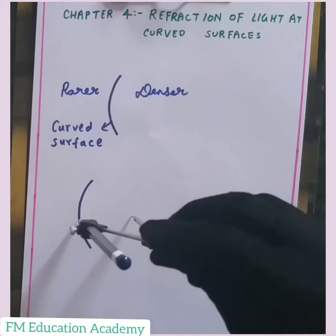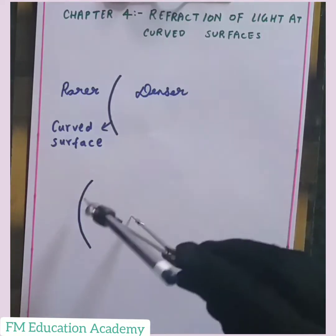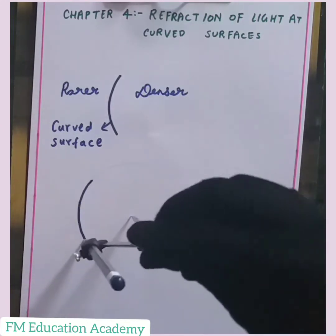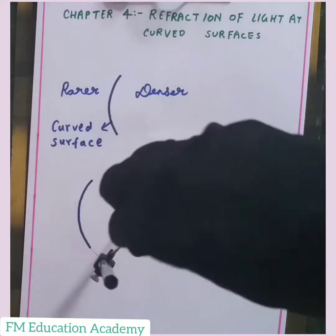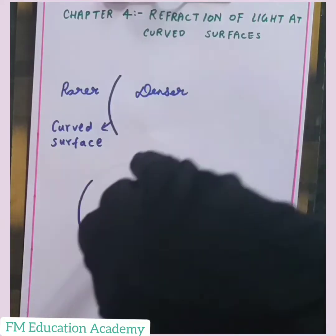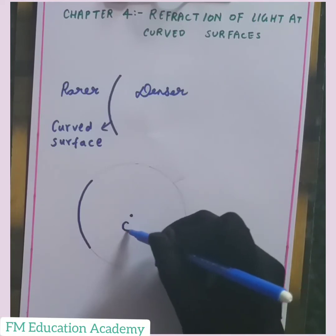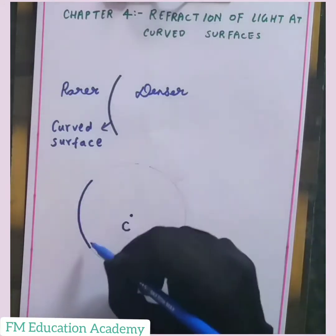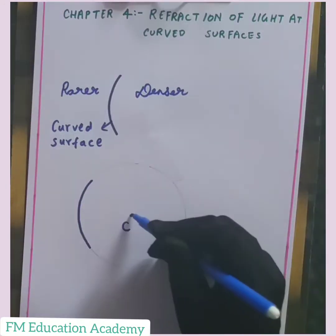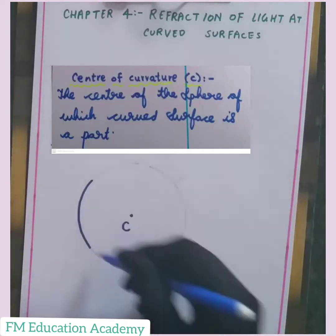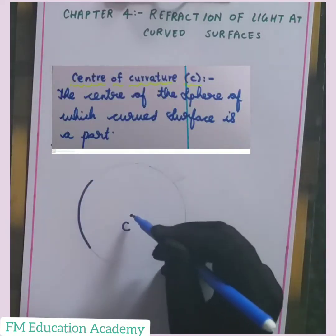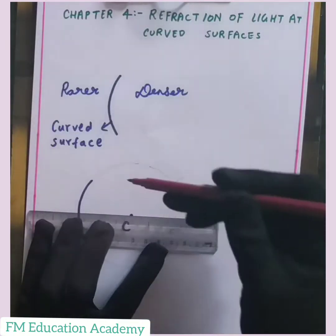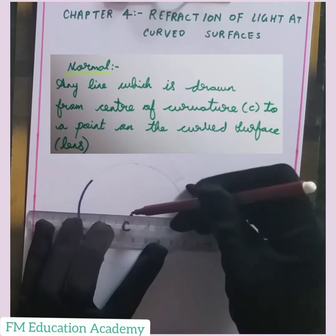Now let us see the terms related to these curved surfaces. We know that this curved surface has a center — this is my curved surface, and from this center I can draw a circle. This is my center of the sphere, indicated by the letter C. This curved surface is a part of a sphere, and the center of that sphere is called the center of curvature.